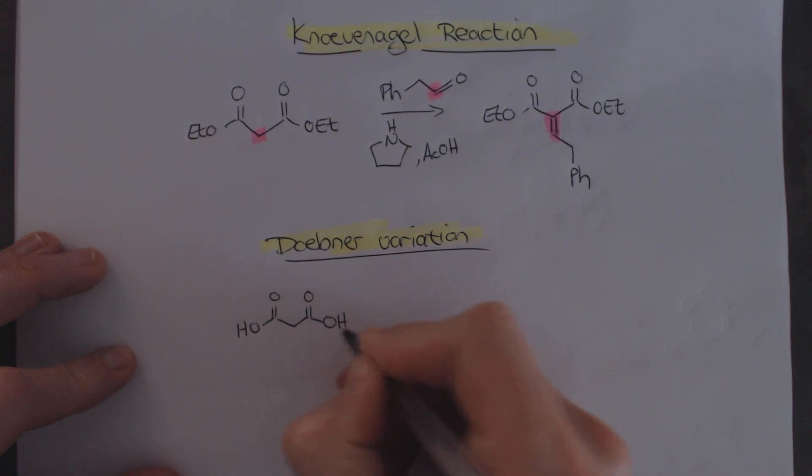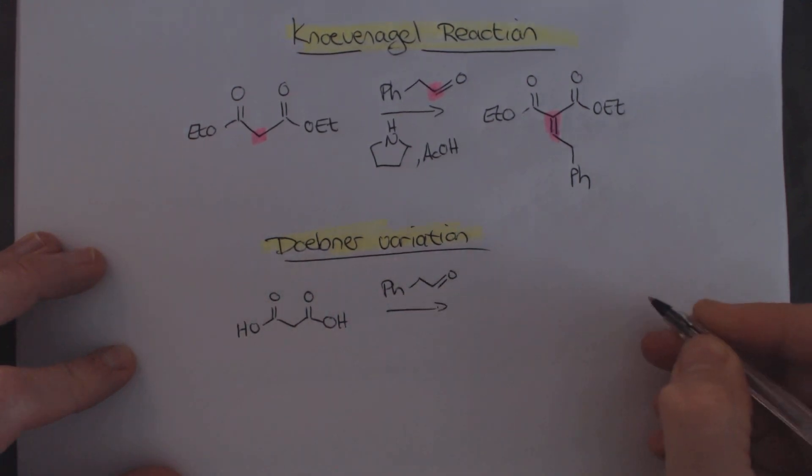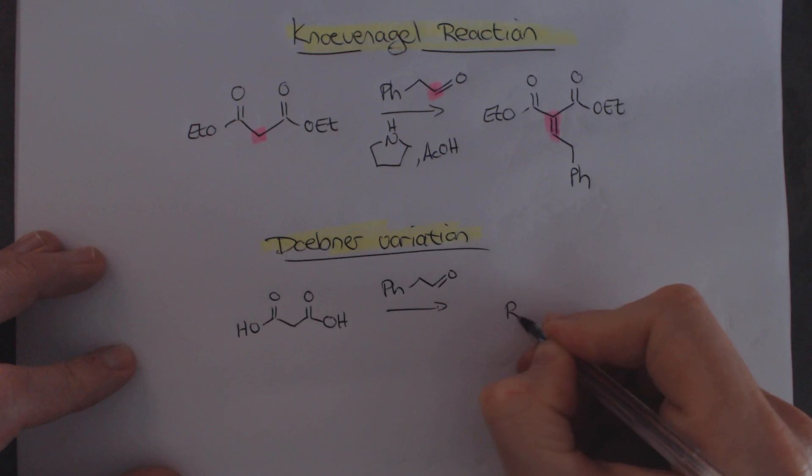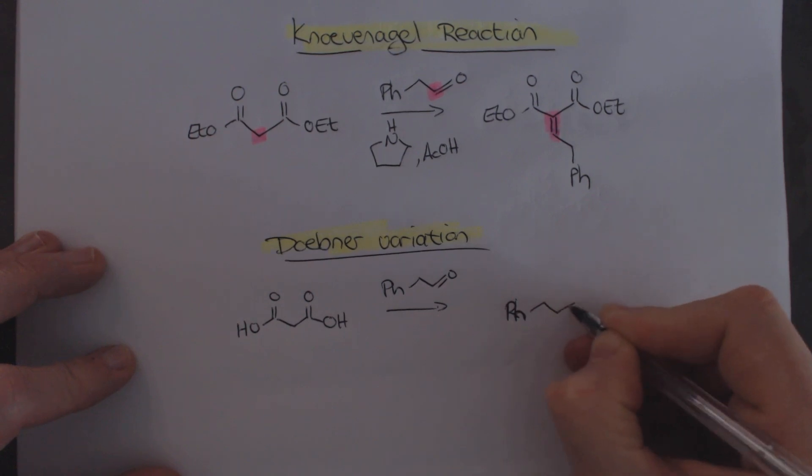And when you do that, and you treat this now with, again, we can use that same, let's just use that same enolizable aldehyde. And the product that we will get at the end is, sorry, R, but pH, is this over there.